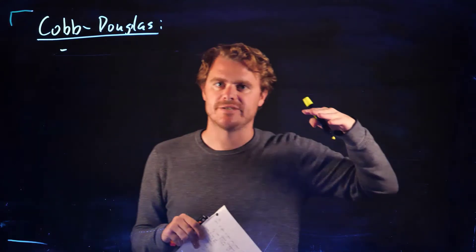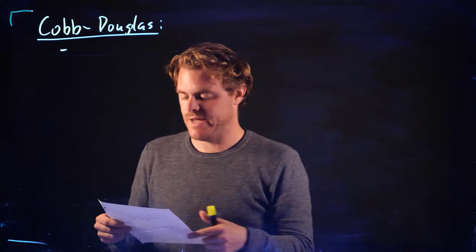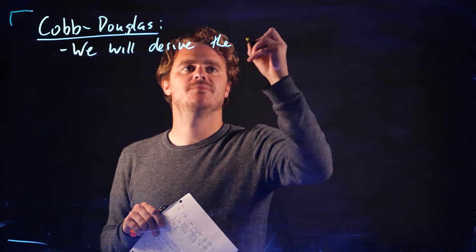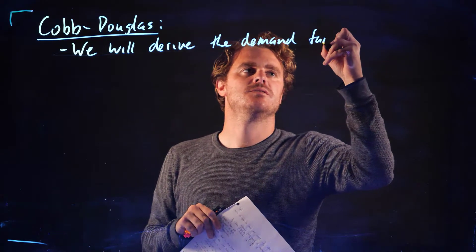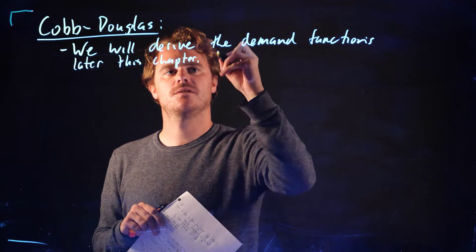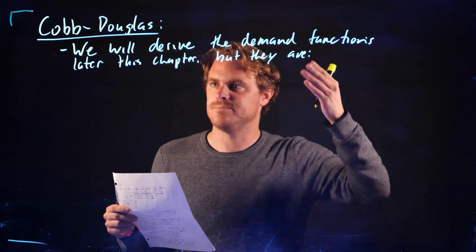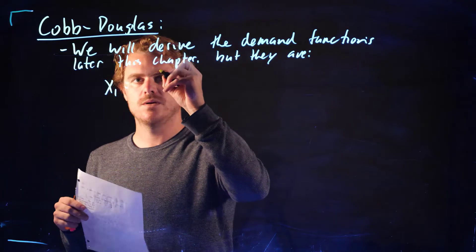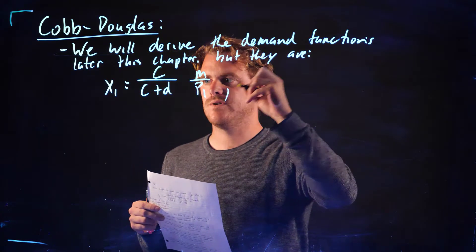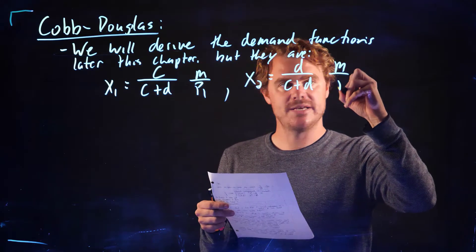We're going to derive the demand functions in the appendix portion of the lecture. I'll state them now and show how we get them in a bit using calculus. They turn out to be: x1 = (c / (c + d)) × (M / P1) and x2 = (d / (c + d)) × (M / P2). Remember the utility function here is x1^c × x2^d.